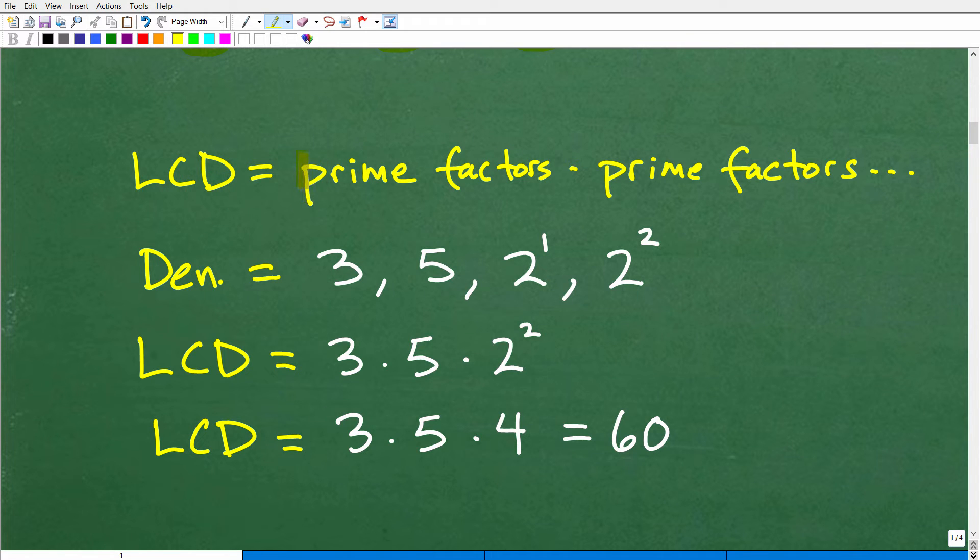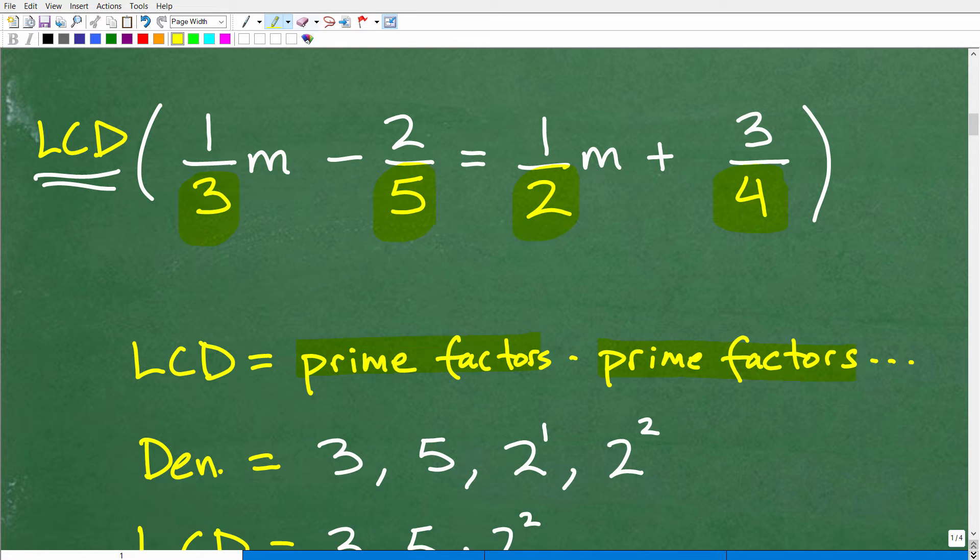Okay, so just as a refresher, the lowest common denominator is basically a product of all the prime factors of the denominator. So, our denominators are 3, 5, 2, and 4. We want to look at the prime factors of each of these. So, this is already a prime number. This is a prime number. This is a prime number. This is not a prime number. So, when we don't have a prime number, you want to factor those denominators such that they are prime factors. So, 4 is the same thing as 2 times 2. So, we have 2 squared here.